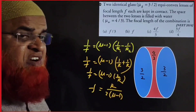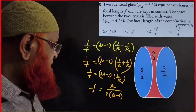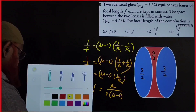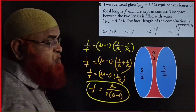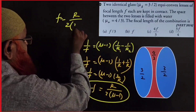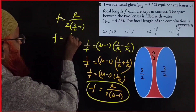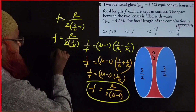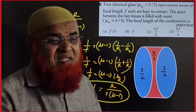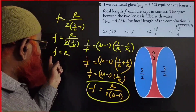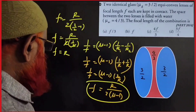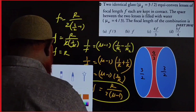For a concave lens with the same radius of curvature, you just get a negative sign. Now, for a convex glass lens with refractive index 3/2: f = R / (2 × (3/2 − 1)) = R / (2 × 1/2) = R. So always remember: for a convex glass lens, focal length and radius of curvature are equal.